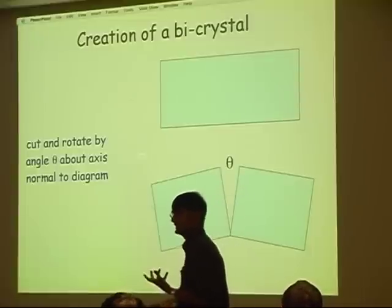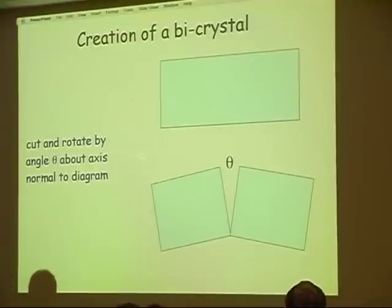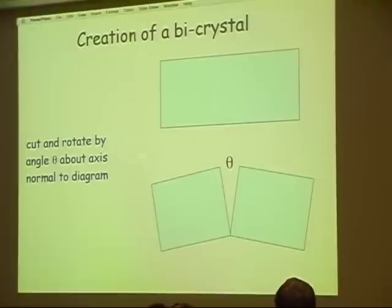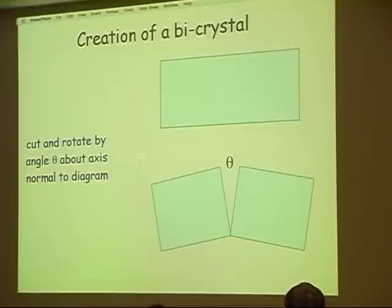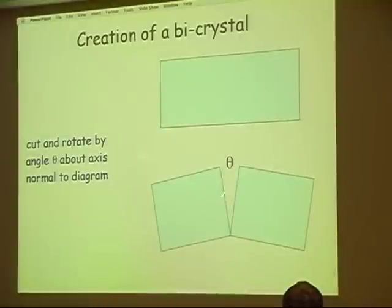Let's describe a boundary by creating it. Imagine that we have a single crystal. I can create a boundary by first cutting that crystal into two parts, then rotating them with respect to each other so that there is a misorientation, and then joining them together. In order to join them together, I need material — because I've cut and I've rotated — and that material is the extra half plane of a dislocation. So I can describe the structure of the boundary in terms of an array of dislocations. This is an array of dislocations, and all those extra half planes represent the material which fills up this gap.